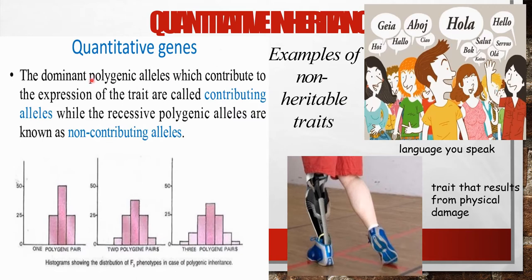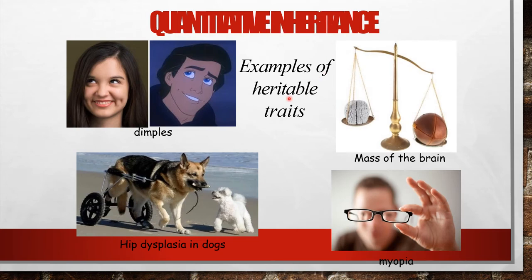In quantitative genetics, dominant polygenic alleles that contribute to the expression of a trait are called contributing alleles, while recessive polygenic alleles are known as non-contributing alleles. Examples of non-heritable traits include the language you speak, and traits resulting from physical damage, such as dimples, hip dysplasia in dogs, mass of the brain, and myopia.